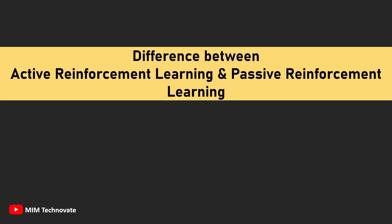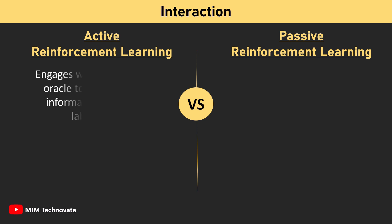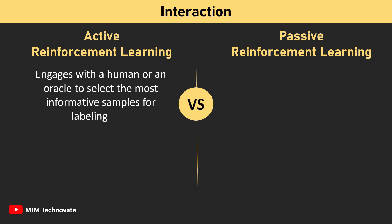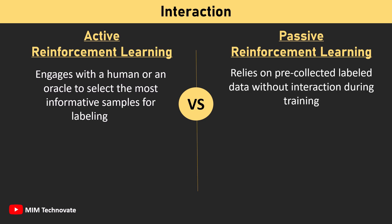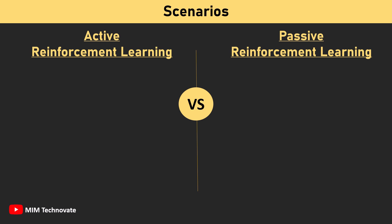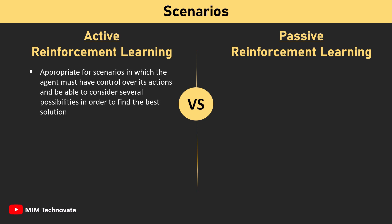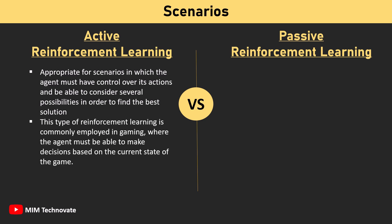Regarding the difference between Active and Passive Reinforcement Learning — in terms of interaction, Active Reinforcement Learning engages with a human or an oracle to select the most informative samples for labeling, while Passive Reinforcement Learning relies on pre-collected labeled data without interaction during training. For scenarios, Active Reinforcement Learning is appropriate when the agent must have control over its actions and consider several possibilities to find the best solution, and is commonly employed in gaming.